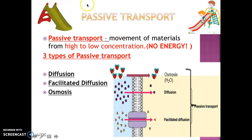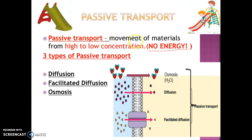The first one is passive transport. When you think of passive, think of someone who is very passive, who likes to sit down and not spend much energy. Passive transport requires absolutely no energy. It is the movement of materials from high to low concentration, meaning you're going from an area where you have a lot of molecules to an area where there are very few molecules.